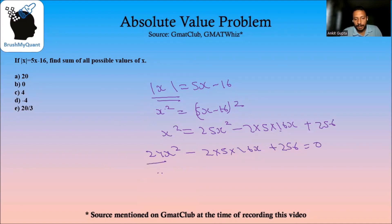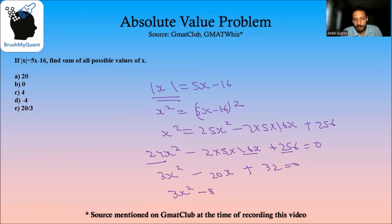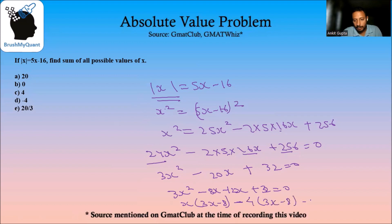That gives us 24x squared minus 2 into 5 into 16x plus 256 is equal to 0. This goes by 8, so we can have 3x squared minus 20x plus 32 is equal to 0. This can be simplified as 3x squared minus 8x minus 12x plus 32 equals 0. Taking x common gives 3x minus 8, and taking 4 common gives 3x minus 8, so we get x is equal to 4 and 8 by 3.